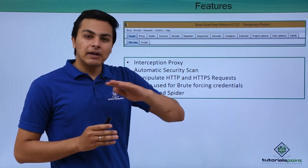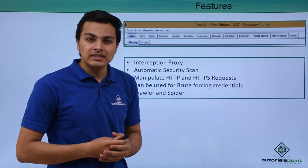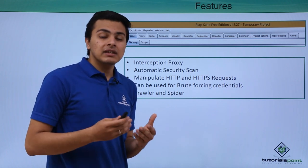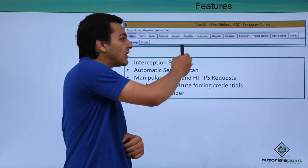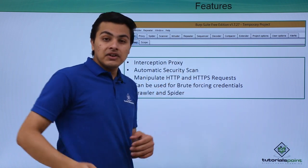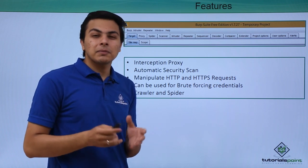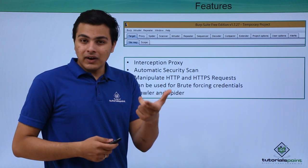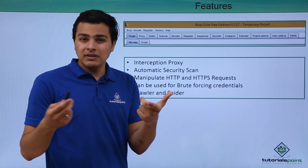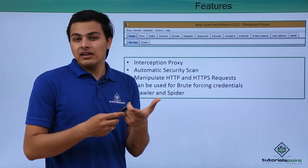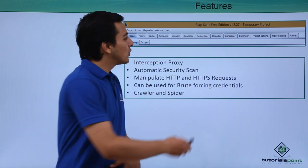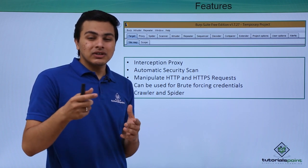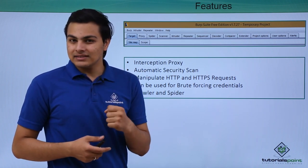There is also a Repeater tab, which is used to send multiple HTTP or HTTPS requests and check what kind of response is given by the server. There is also a Decoder tab, which you can use to perform crypto operations — for example, if you find a string that might be your session ID but is encrypted, you can send it to the Decoder to identify what kind of string it is.